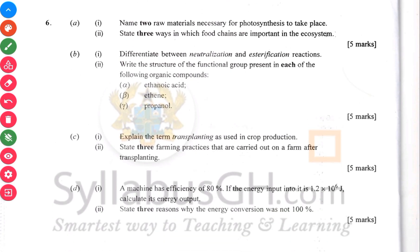Question six: name two raw materials for photosynthesis. And then name three ways in which food chains are important in the ecosystem.